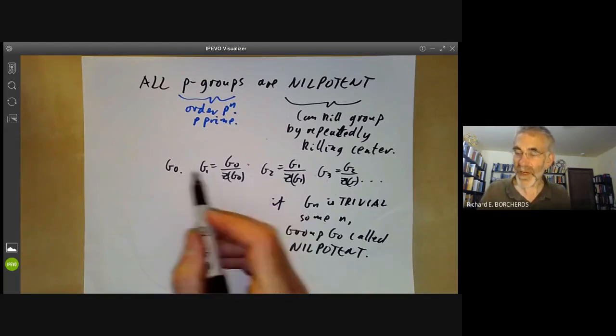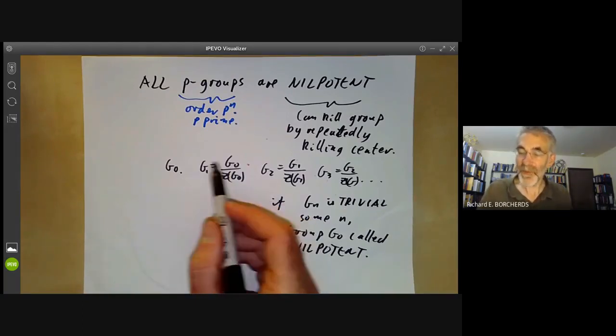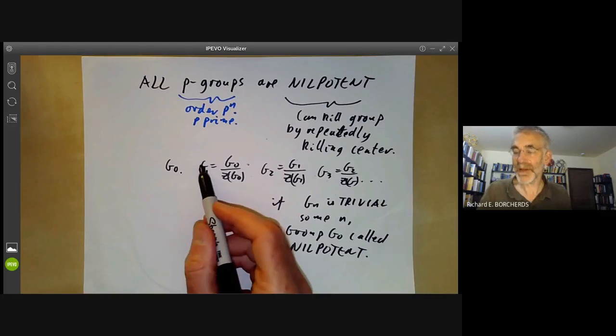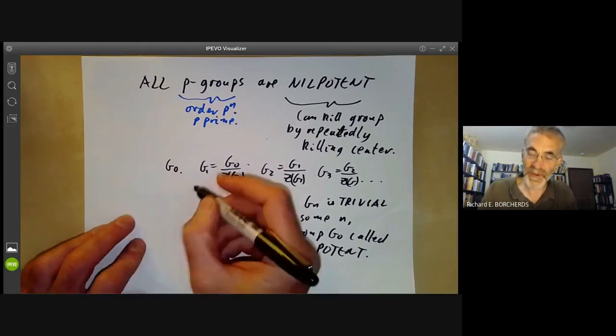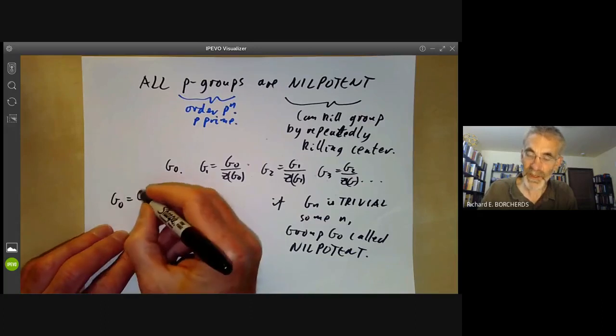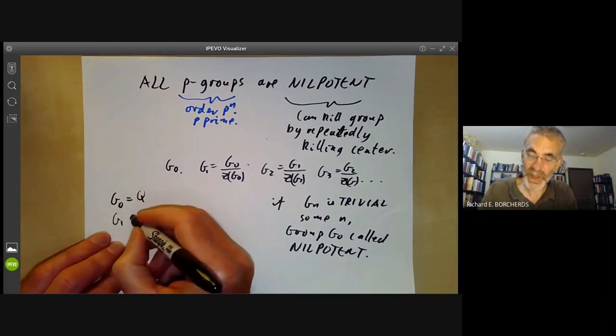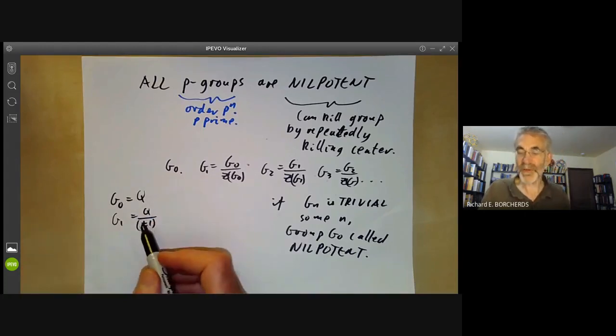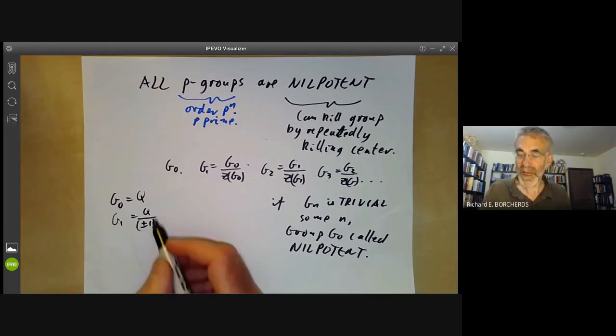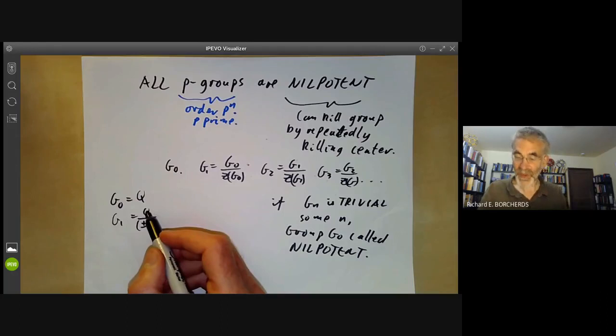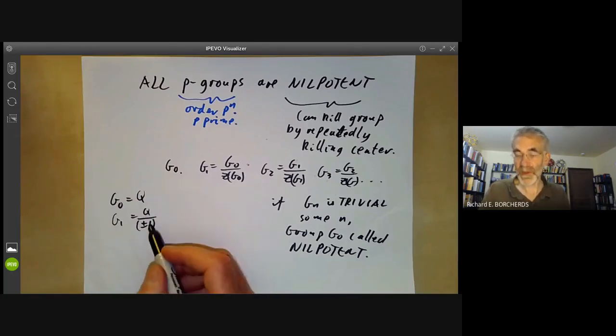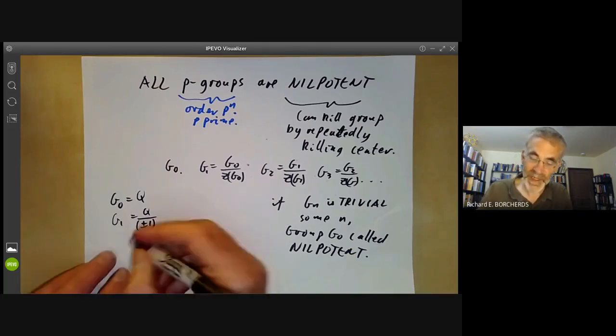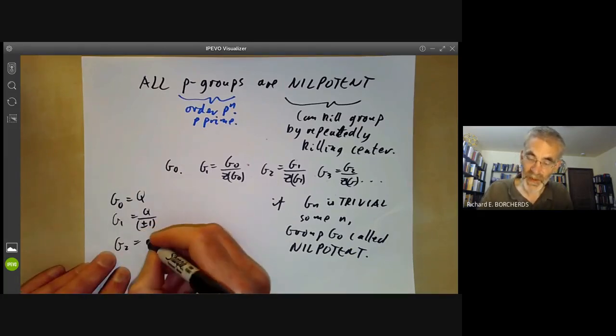Notice, by the way, that if you kill the centre of a group, the resulting group might still have a non-trivial centre. For instance, we saw this with the quaternions. If we take G naught to be the quaternions, then G1 is the quaternions modulo the group plus or minus one. So even though we've killed the centre of G0, G1 might still have a centre. There are things, there are elements of the quaternions that don't commute with each other, but do commute once if you've killed off the element minus one. So in this case, G2 would be the trivial group.